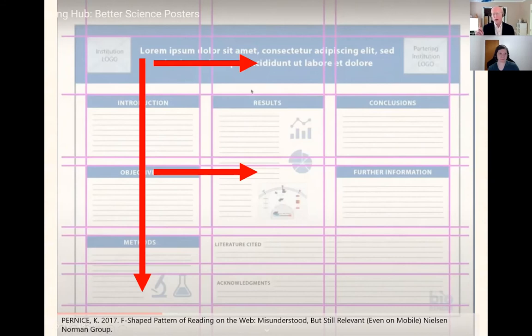But notice my background here. This is how people read posters if you lay them out in this normal way. And if you had eye tracking data for all your posters and you were getting this pattern, you would say, this is bad.